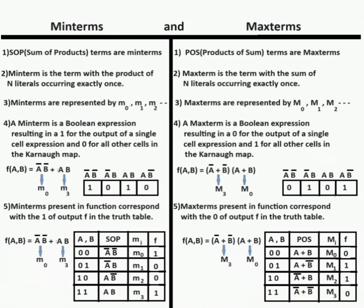Hello. Minterms and maxterms: SOP terms are minterms, and product of sum POS terms are maxterms. A minterm is the term with the product of n literals, and a maxterm is the term with the sum of n literals. Minterms are represented by small letter m and maxterms are represented by capital letter M.